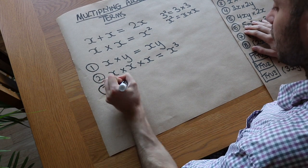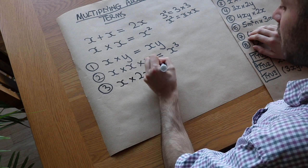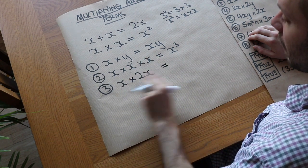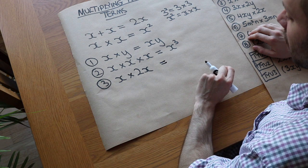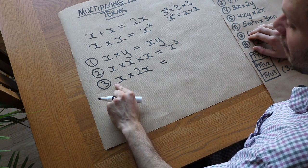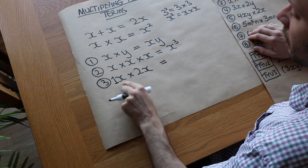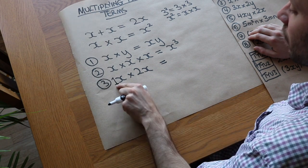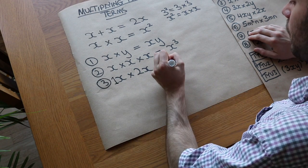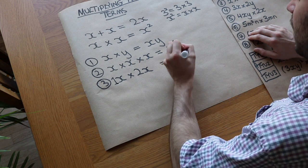Thirdly, we've got x times 2x. I always start, when you've got numbers in front of these variables, I always start by timesing the numbers together first. So we've just got a single 2 here, and there's implicitly a 1 in front of that. So we could think of that as 1x, because 1 lot of x is the same as x. So 1 times 2 is 2, and then we've got the x times the x, which is x squared.